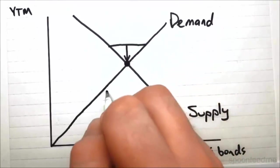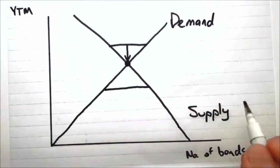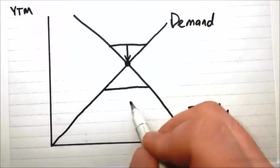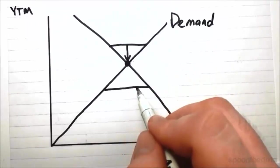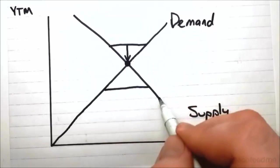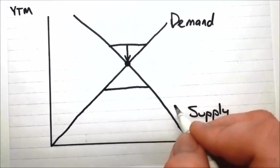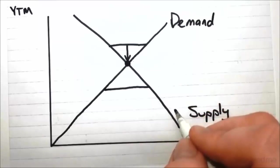It works the same in the opposite direction. If the yield to maturity is too low, you've got too many suppliers who want to sell bonds at that low yield to maturity, but not enough people to buy them. So once all the buyers have bought and you've got these excess suppliers trying to sell off bonds, some of them are just going to have to suck it up and offer a higher yield to maturity, which will prompt new buyers to step in and purchase.